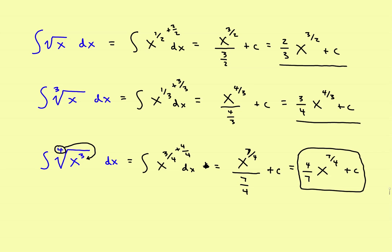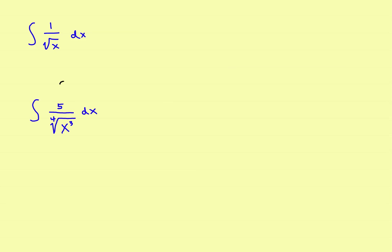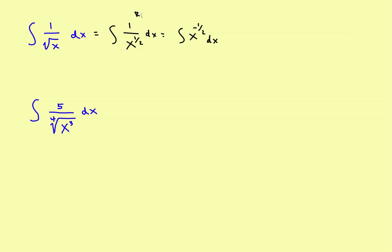Those examples had radicals in the numerator. Now let's take a look at some where the radical is in the denominator. On this one, first change it into fractional form. This becomes the integral of 1 over x to the 1 half power, dx. Then take the x to the positive 1 half from the denominator and move it to the numerator, making it x to the negative 1 half power, dx. This is what I'll call the rewrite phase — rewriting it so you can apply the rule.